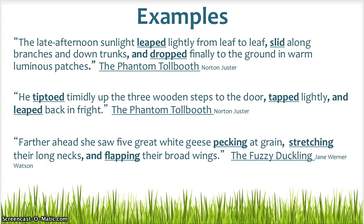Here are three examples of magic three sentences from published literature. I want you to choose your favorite example and write one of these examples below your definition of a magic three sentence. As I read these examples, I want you to listen for the rhythm of a magic three sentence. "The late afternoon sunlight leaped lightly from leaf to leaf, slid along branches and down trunks, and dropped finally to the ground in warm, luminous patches." You should be hearing my voice change as I say each verb. That's because the rhythm of a magic three comes from the commas and the verbs working together.